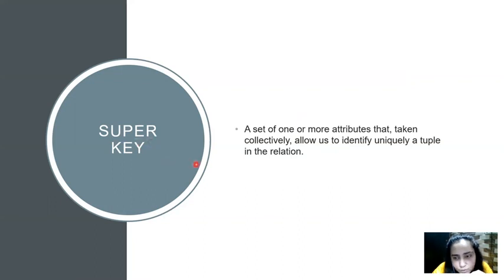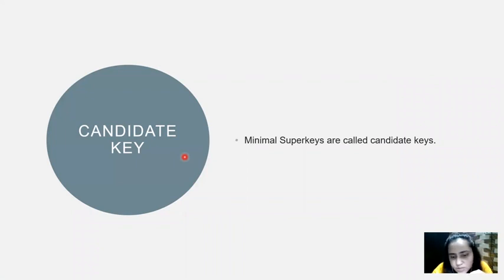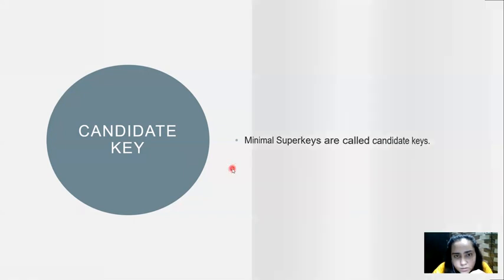Just like you have a super key, you also have a candidate key. A candidate key is a minimal super key. Super keys can sometimes contain attributes that are not required at all to identify a tuple uniquely. If you remove such unnecessary attributes, what you get is a set of attributes that is completely necessary — nothing extravagant about it. That would be a candidate key. We'll understand this better with an example.